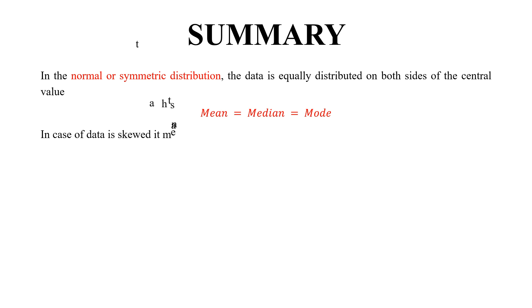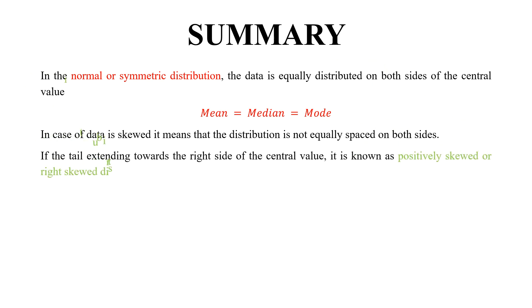In case the data is skewed, it means that the distribution is not equally spaced on both sides. If the tail extending towards the right side of the central value, it is known as positively skewed or right skewed distribution. In this case, mean is greater than median and median is greater than mode.